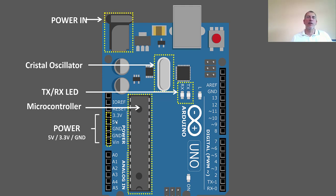From VIN all the way to the 3.3V pin, this is basically your power and grounding area. You have two pins for ground, a VIN voltage pin, and a 5V pin. You can supply voltage to devices through these pins. You'll see how we use these pins when we build a project.